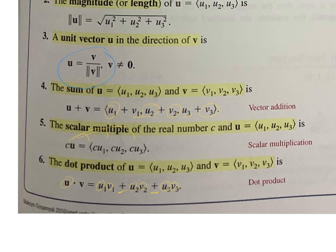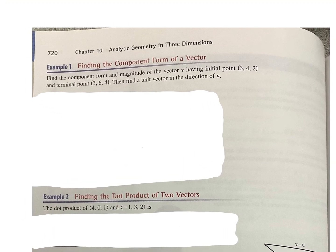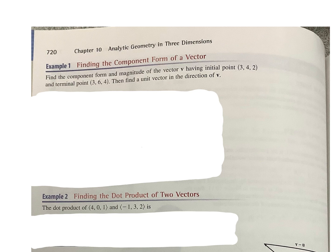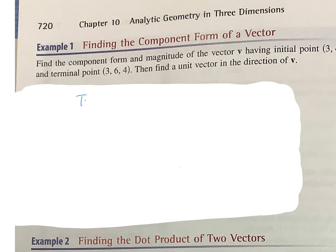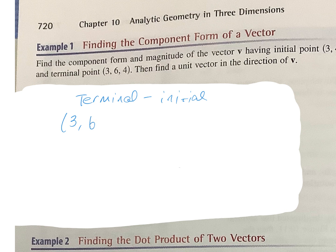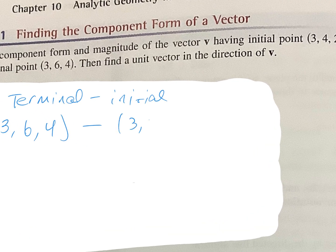All stuff we've done before. So let's just do three little examples. There's a web assign. You can do half of it today. We'll finish this up tomorrow, and then you guys will be done. So in this case, it says find the component form and the magnitude of vector v having the initial point. So remember this, to find the component form, it's terminal minus initial. So my terminal point is 3, 6, 4 minus my initial point is 3, 4, 2.